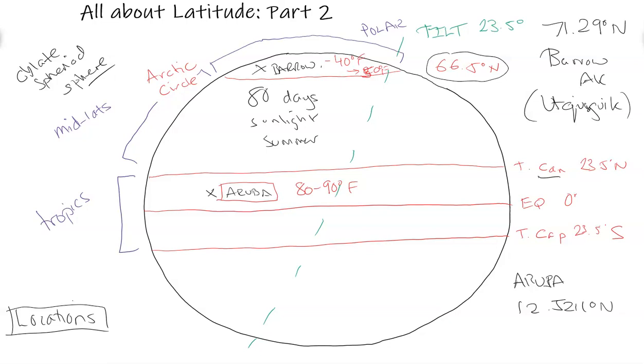And then in the winter, in an opposite thing where the tilt causes the northern hemisphere to point away from the sun during the winter, Barrow, Alaska is hidden by the shape of the Earth because of the straight sunlight. So it has around 67 days of complete darkness, of nighttime. The sun doesn't rise for 67 days.